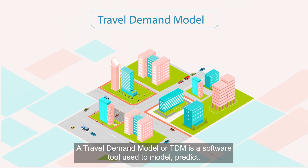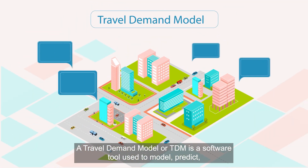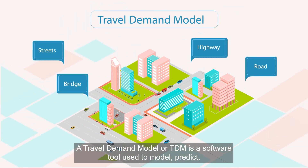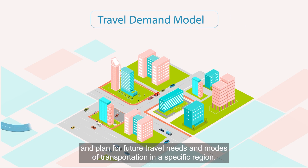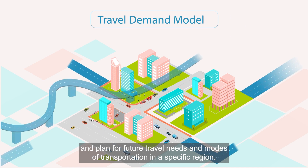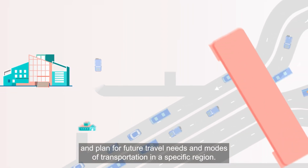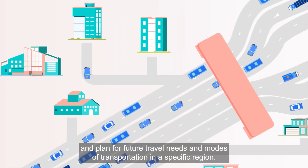A travel demand model, or TDM, is a software tool used to model, predict, and plan for future travel needs and modes of transportation in a specific region.